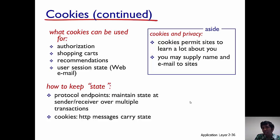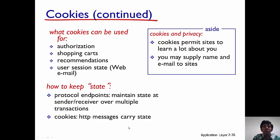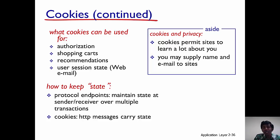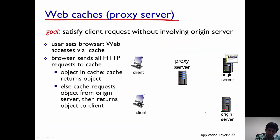So what are cookies useful for? They help store user state information, which HTTP does not allow. They are very useful for authorization, shopping carts, and recommendations. Cookies were invented because HTTP is stateless and there is a need to maintain some state about the user. However, cookies also have a controversial side — they permit websites to know a lot about you, and may supply your information, like your name and email, to third parties.